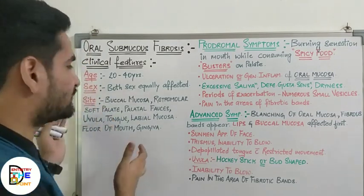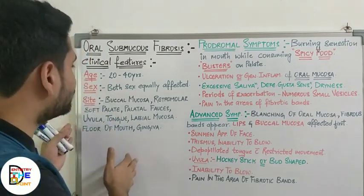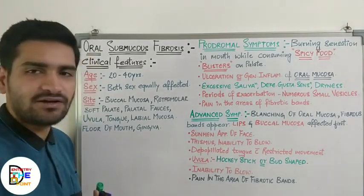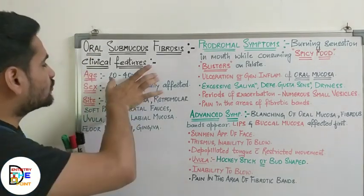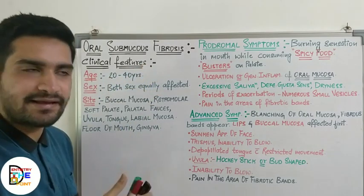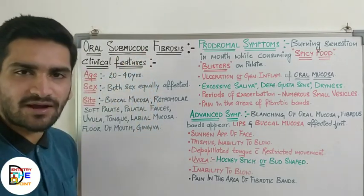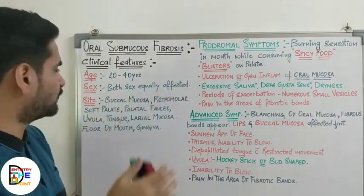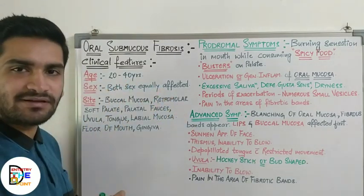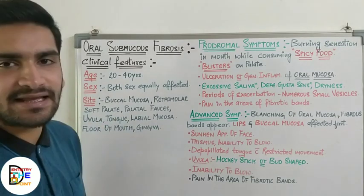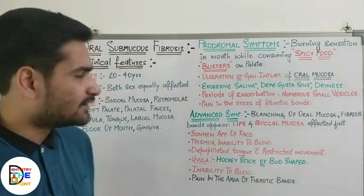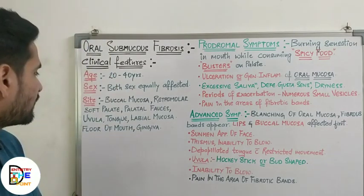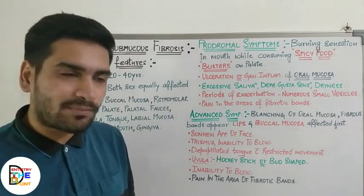In the clinical features, we will first look at the most common age, sex, and site. The most common age of occurrence is between 20 to 40 years — most cases of oral submucous fibrosis are seen in this age group. Regarding sex, both sexes are equally affected; there is no sex predilection seen.